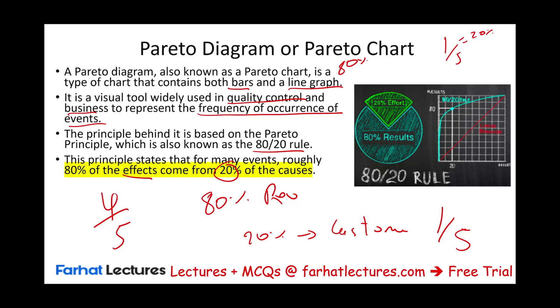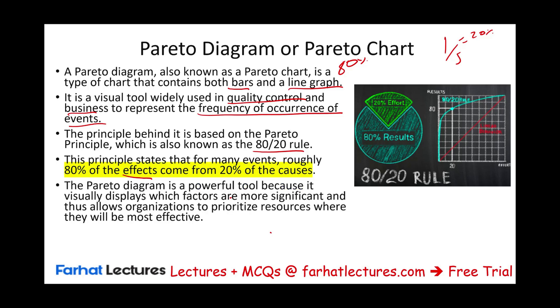We want to talk to those 20% of salespeople. We want to ask them, what are you doing that you are generating all these sales? We want to learn from you so we can standardize this process. Or for example, 20% of the road will have 80% of the traffic. This diagram is a powerful visual tool because it displays which factors are significantly contributing to the organization.